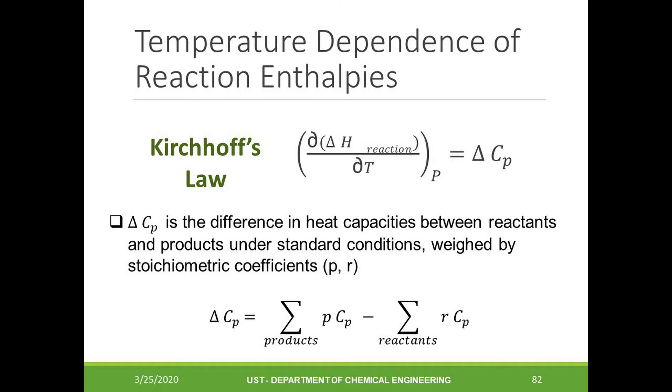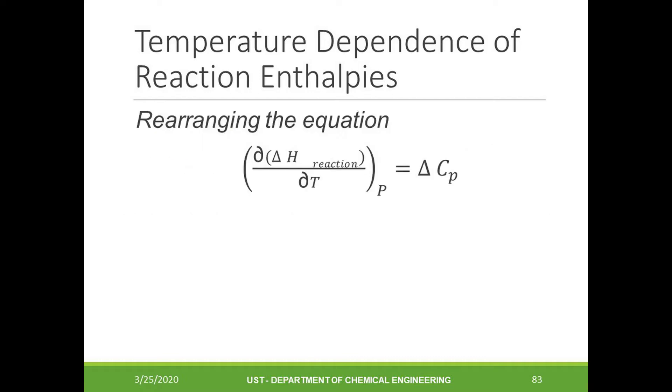Before that, take note that delta Cp is equal to the sum of the heat capacities of the products minus the sum of the heat capacities of the reactants. First we rearrange the differentials. We can bring the dT to the other side and this leads to the following equation. In the next step, we will integrate this equation. Integration will allow us to relate the enthalpy of reactions at two temperatures.